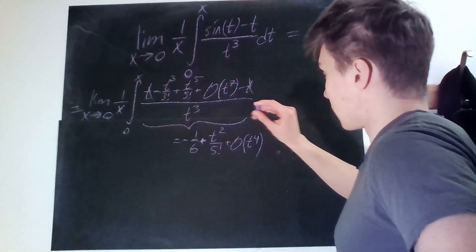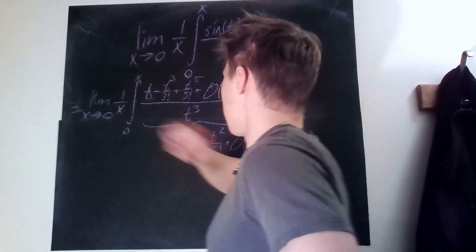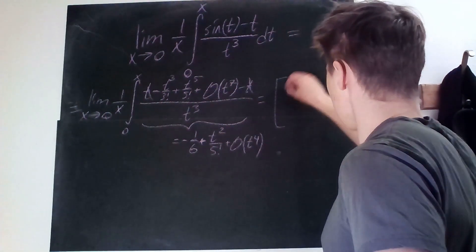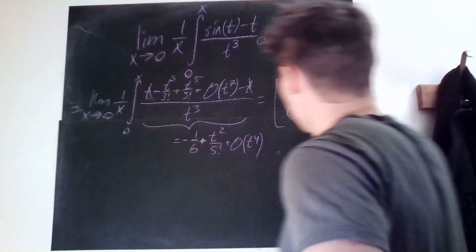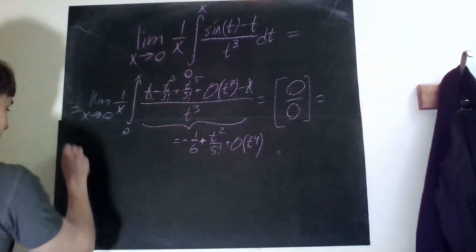So therefore we can use L'Hôpital because now we have something tending to zero divided by something tending to zero. This is a so-called zero over zero and then we can use L'Hôpital.